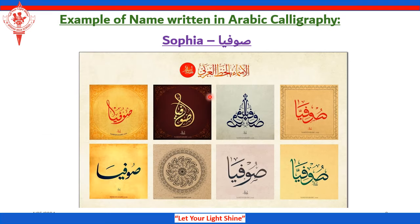Here is another example of how to write your name or any name in Arabic calligraphy. This is the name Sofia. Look how many ways this name is written. All of them are so beautiful — it's a kind of piece of art, not only handwriting.